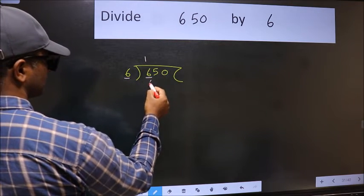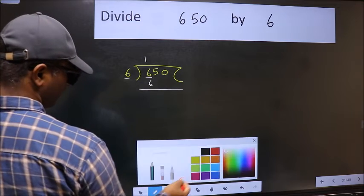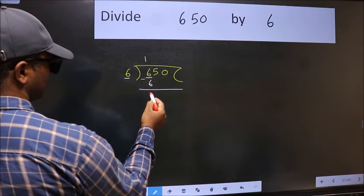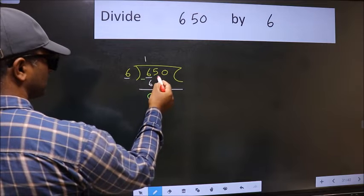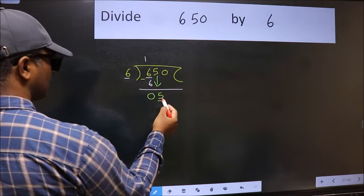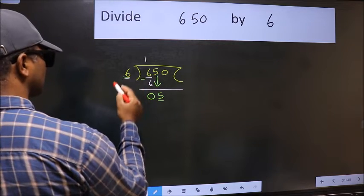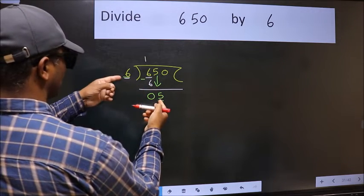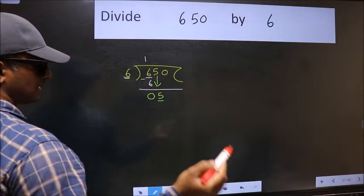6 once 6. Now we should subtract, we get 0. After this, bring down the beside number, so 5 down. Now here we have 5 and 6 here. 5 is smaller than 6, so we should bring down the second number.